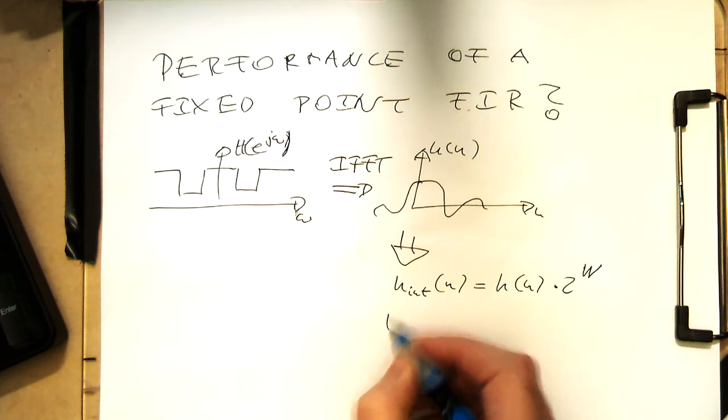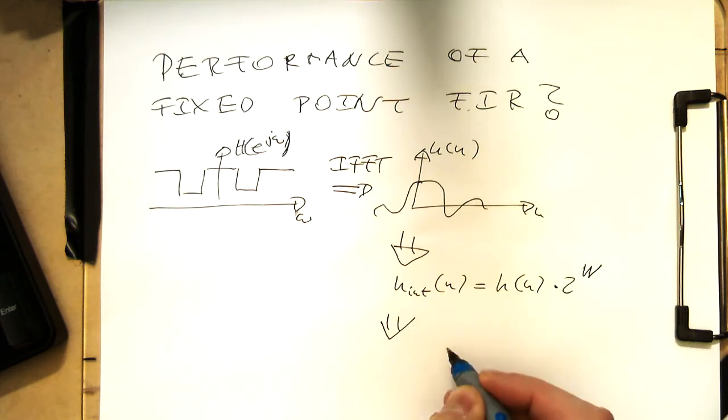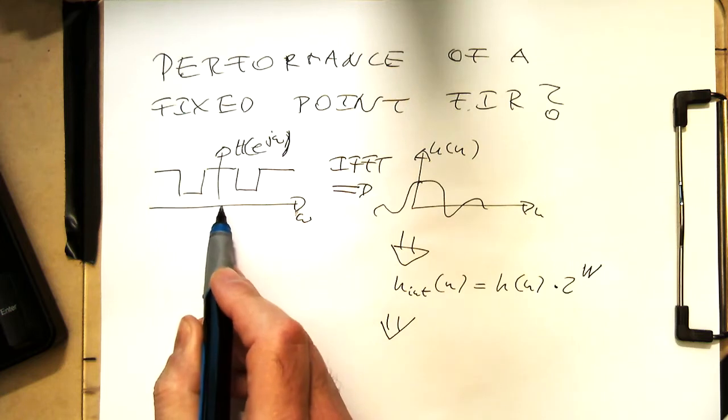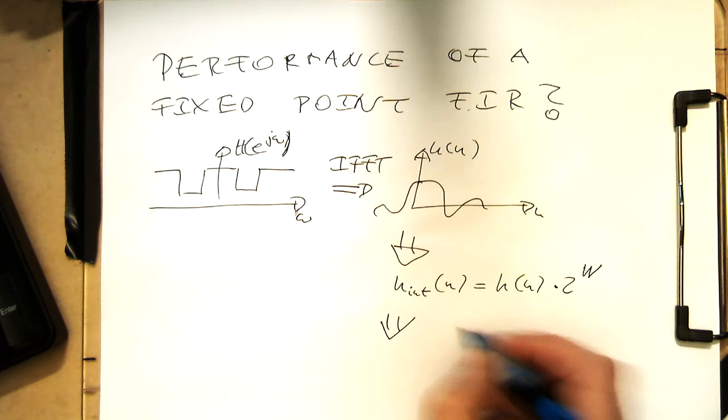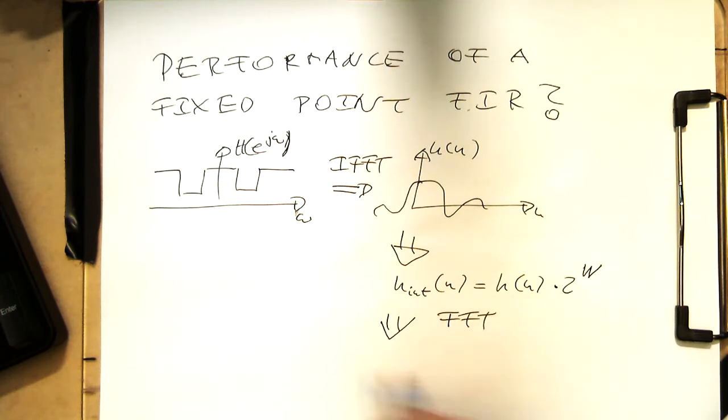Now what we would like to know is how the real response is here similar to that. We just do here again a Fourier transform. We do the fast Fourier transform and then we are getting the real response here out there.